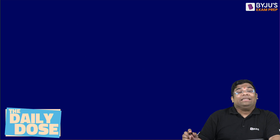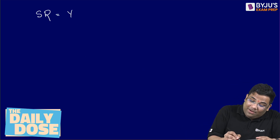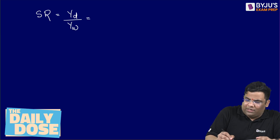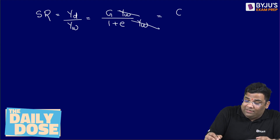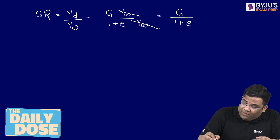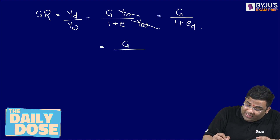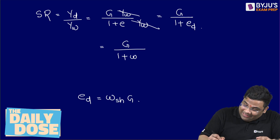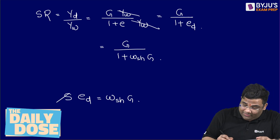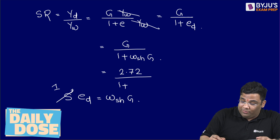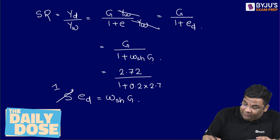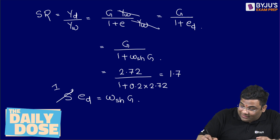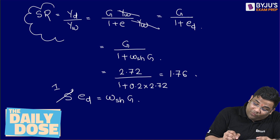There is another formula for finding the shrinkage ratio: gamma D divided by gamma W. Since gamma D equals G times gamma W divided by 1 plus E, dividing by gamma W gives G divided by 1 plus E. For the shrinkage ratio, we use the dry void ratio ED, which equals the shrinkage limit times G. So the shrinkage ratio equals G divided by 1 plus WSH times G, which is 2.72 divided by 1 plus 0.2 times 2.72. This also gives approximately 1.76. These are the two formulas for finding the shrinkage ratio.